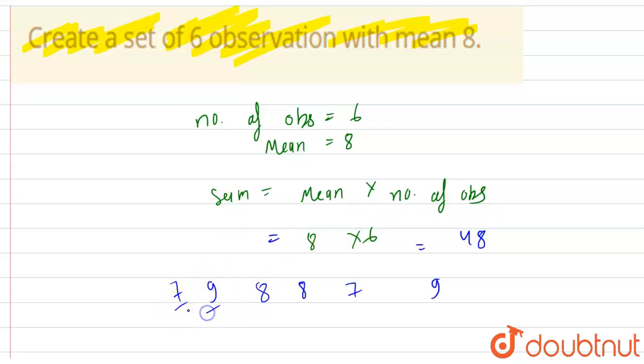Let's add them. 7 plus 9 is 16, 16 plus 8 is 24, 32, 32 plus 7 is 39, 39 plus 9 is 48.